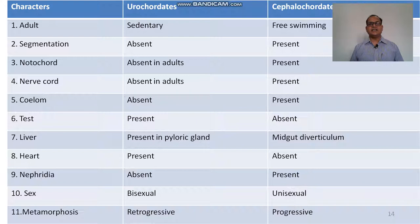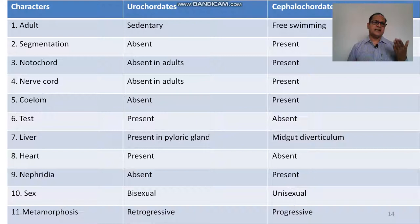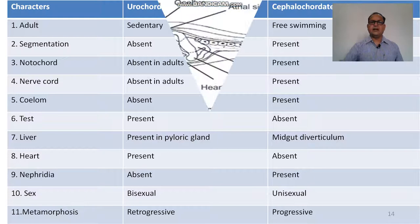Differences between Urochordata and Cephalochordata: adults are sedentary in Urochordata, free-swimming in Cephalochordata. Segmentation absent in Urochordata, present in Cephalochordata. Notochord absent in adult urochordates, present in cephalochordates. Nerve cord absent in adult urochordates, present in cephalochordates. Coelome absent in Urochordata, present in Cephalochordata. Other differences include: tail, liver, heart, nephridia, sexes, and metamorphosis — retrogressive in Urochordata, progressive in Cephalochordata.